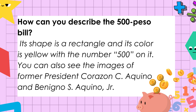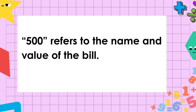How can you describe the 500 peso bill? Its shape is a rectangle, and its color is yellow with the number 500 on it. You can also see the images of former President Corazon C. Aquino and Benigno S. Aquino Jr. When we say 500, it refers to the name and value of the bill.